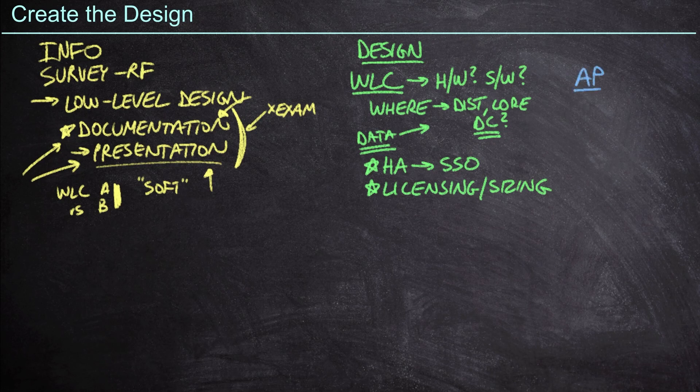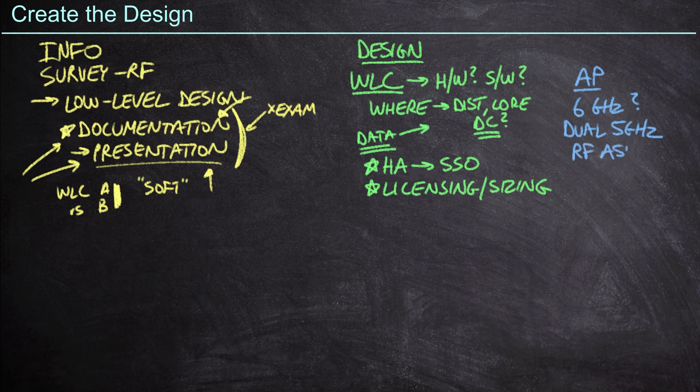Now, naturally, we also need to make sure we're getting the correct access points in place. Do we need six gigahertz radios? Is that what we decided as part of our info gathering? Can we get away with dual five gig bands? And so that might be an option. Or can we go with single five gigahertz radios? Do we need, by the way, the Cisco RF ASIC? I would argue in most cases, absolutely. This is the value of Cisco and we want to be leading with this.